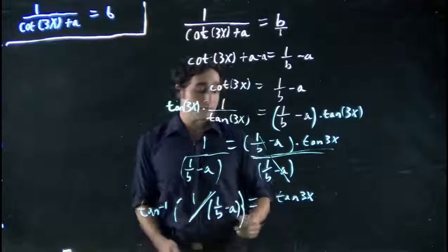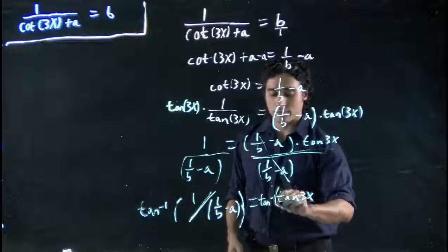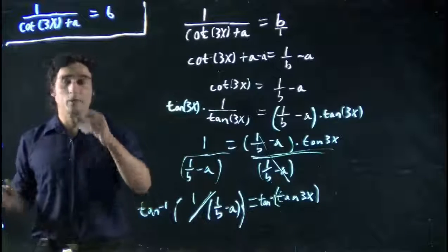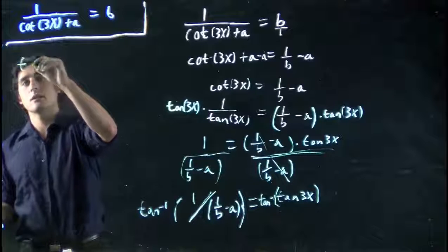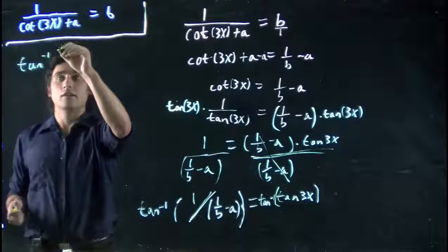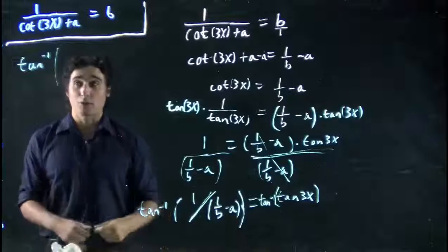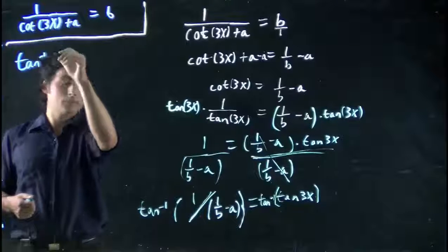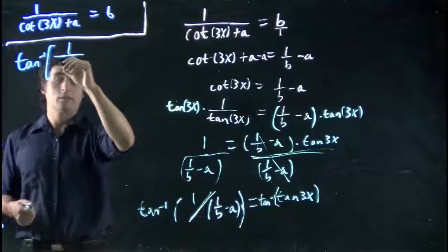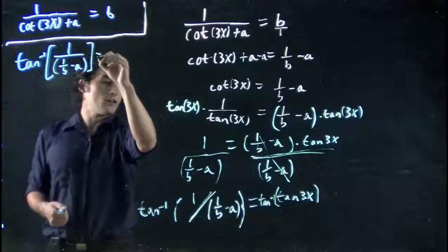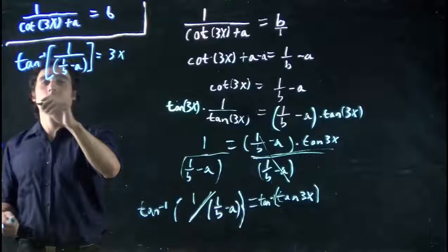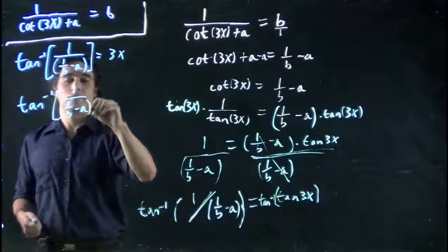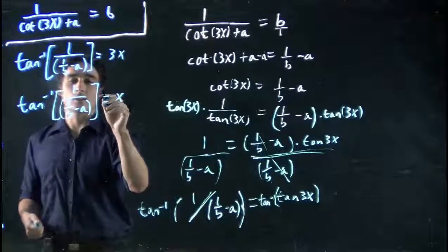Tan to the minus 1 on both sides. So we're going to have tan to the minus 1 of this rather ugly mess. Tan to the minus 1 of 1 over 1 over b minus a, and that's all equal to 3x. So finally, we can say tan to the minus 1 of 1 over 1 over b minus a equals x, as long as this is all divided by 3.